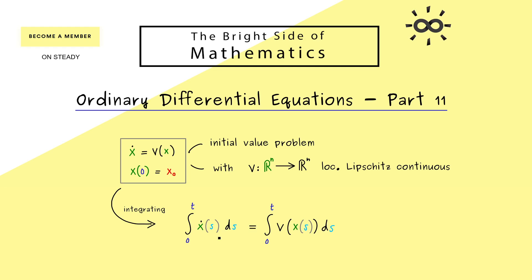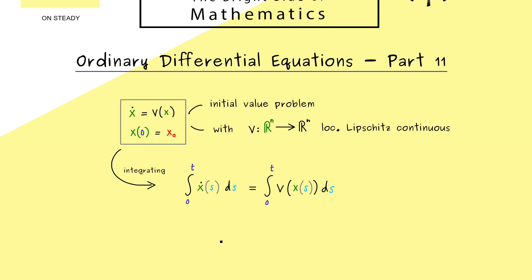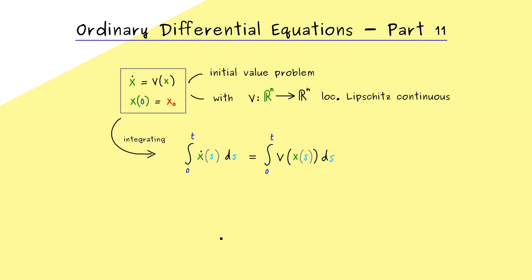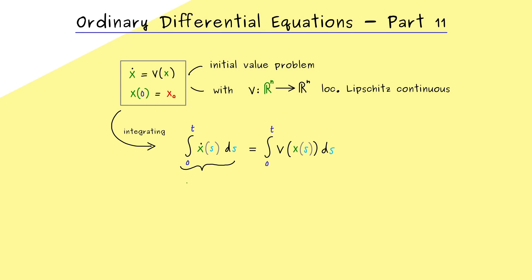Okay. And since we have the derivative of x here on the left hand side, we can use the fundamental theorem of calculus. This implies, this here is simply x of t minus x of 0. However, x at the time 0 is by assumption given as x0. Therefore, this whole calculation implies that we have a formula for the function x of t. Namely, it is given by the point x0 plus the integral of the function v.